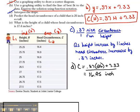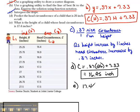In Part E, it says: what is the height of a child whose head circumference is 17.4 inches? This time they're giving us the head circumference and asking us to solve for the height, or solve for H. We can plug 17.4 in place of the head circumference: 17.4 equals 0.37H plus 7.33.